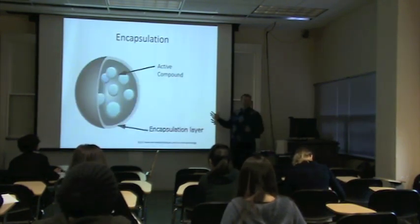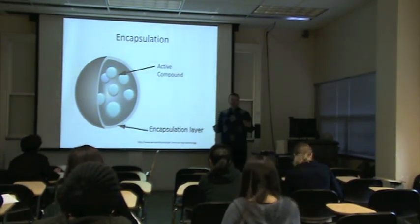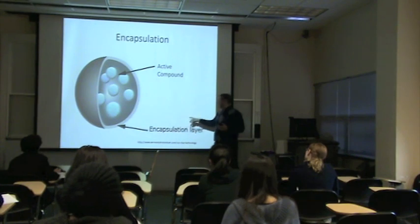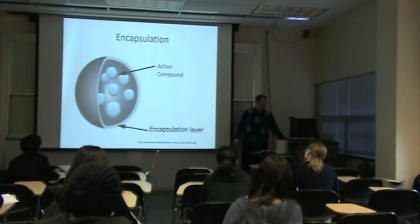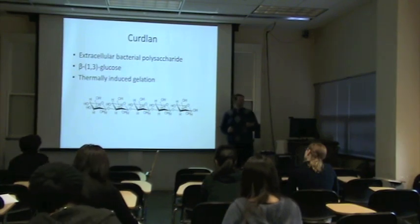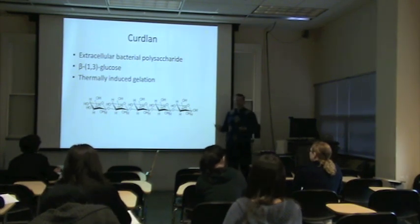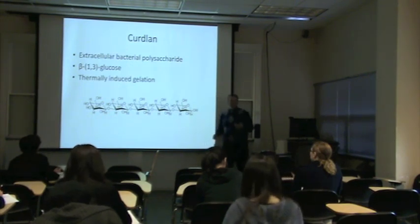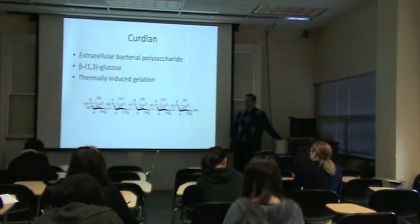A basic representation shows your active compound in a homogeneous mixture with your encapsulating material. Depending on the exact method, you may or may not have a specific layer on the outside. The first material looked at in this study was curdlan — a polysaccharide produced by bacteria. It has a structure similar to cellulose, which is glucose with beta-1,4 linkages, but curdlan has a beta-1,3 linkage, giving it different properties. When you heat it, you get a thermally induced gel.